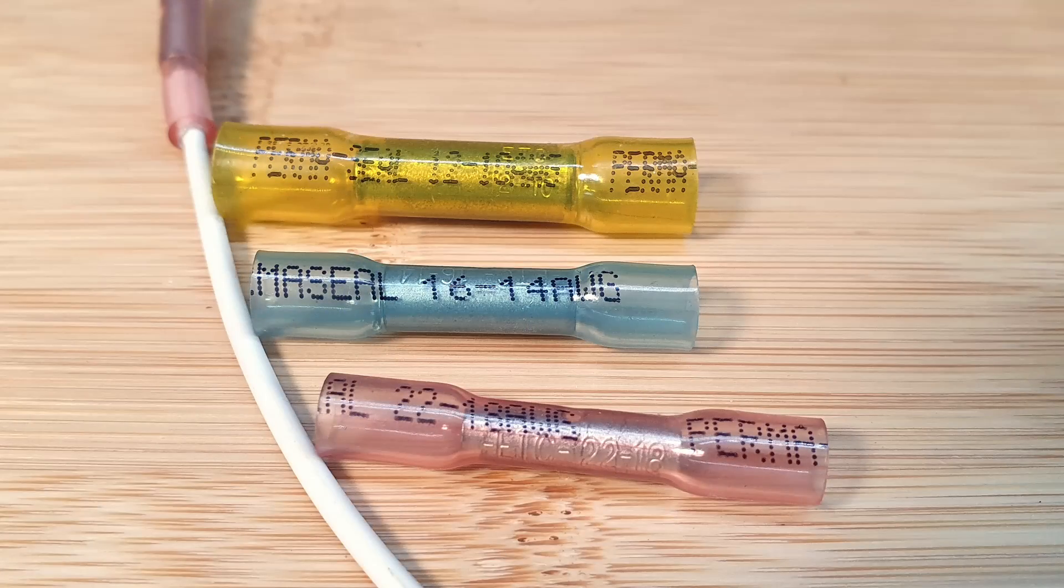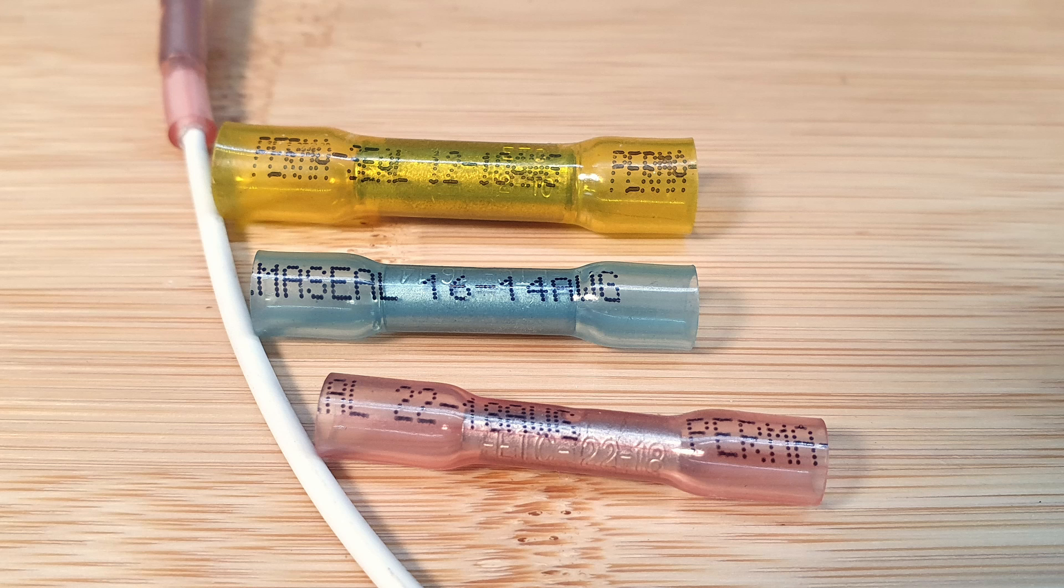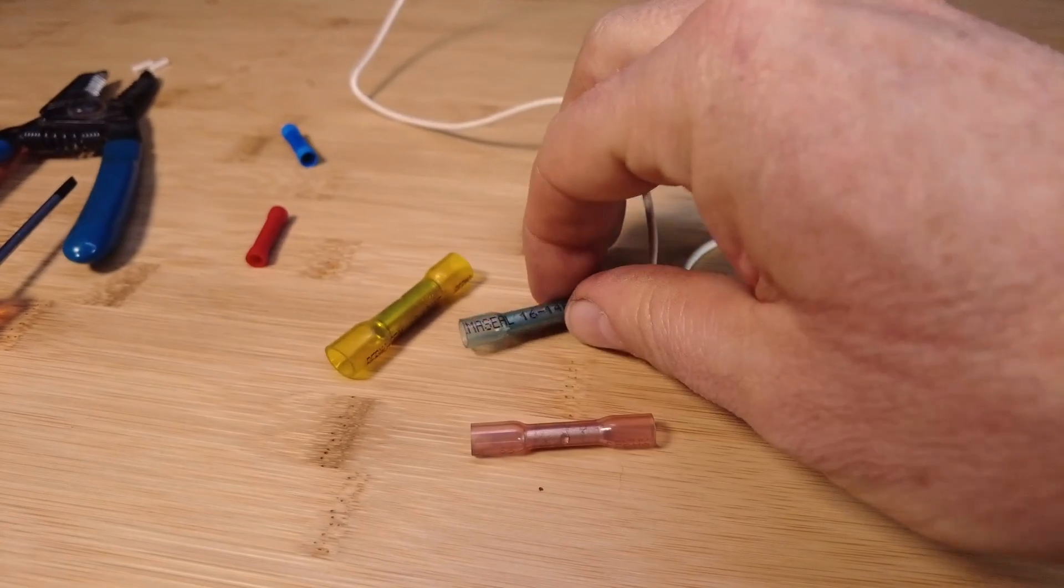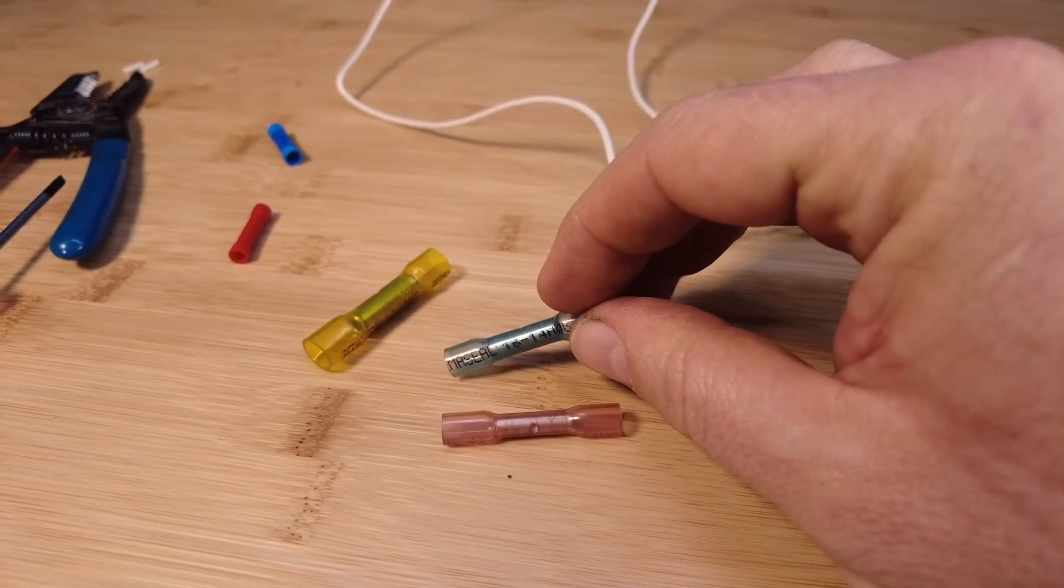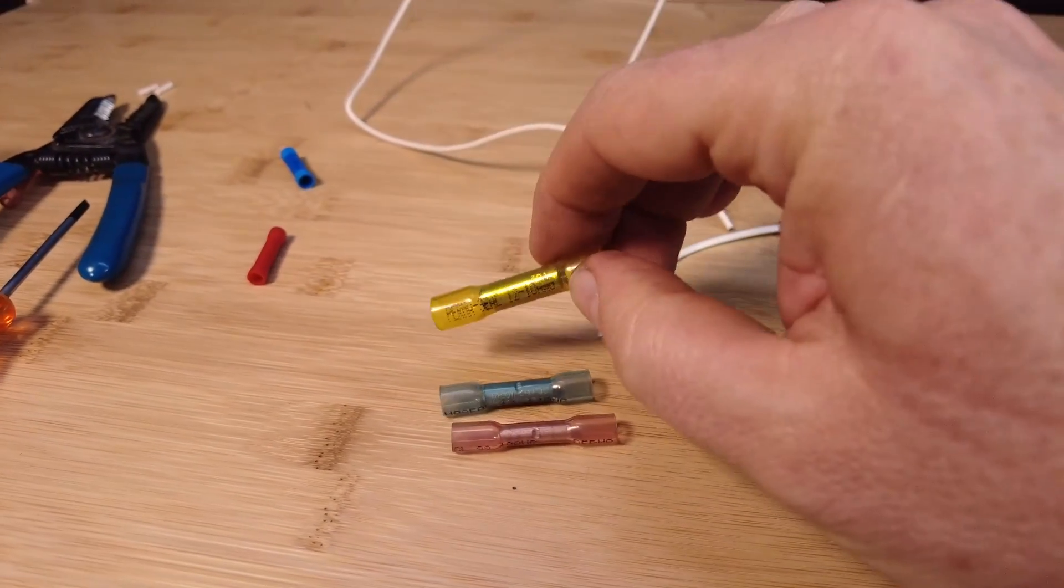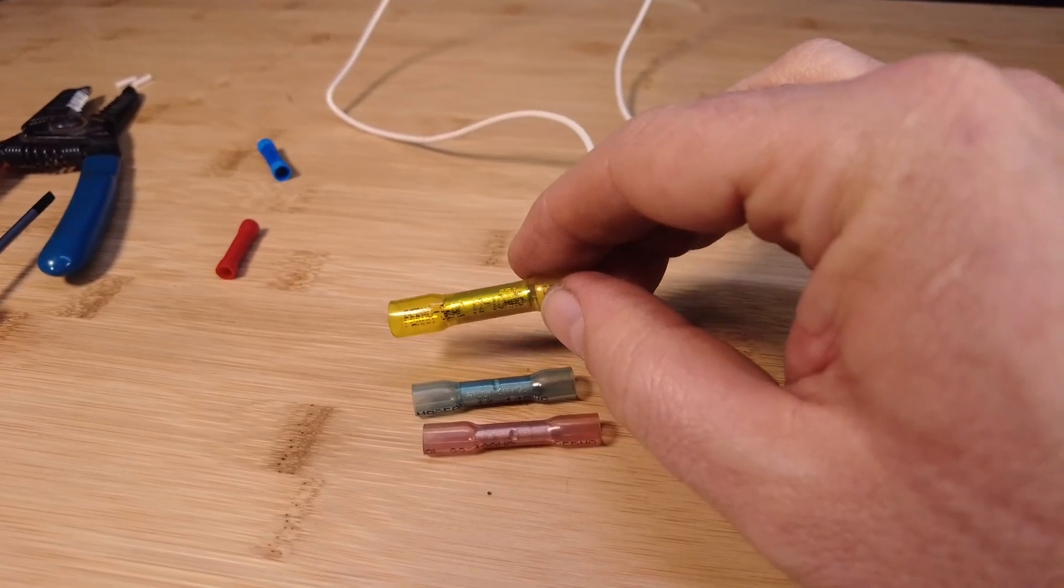They are color-coded. So red is 18 to 22 gauge. In this case, this is an 18 gauge wire that we're going to be working with. This blue color is 14 to 16 gauge. And then this yellow color is 10 to 12 gauge.